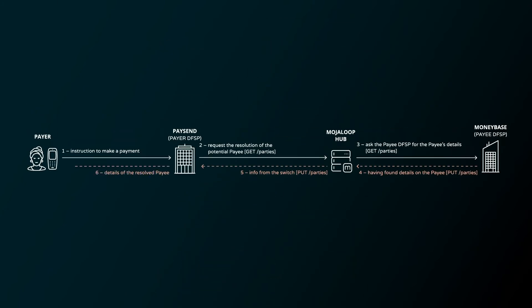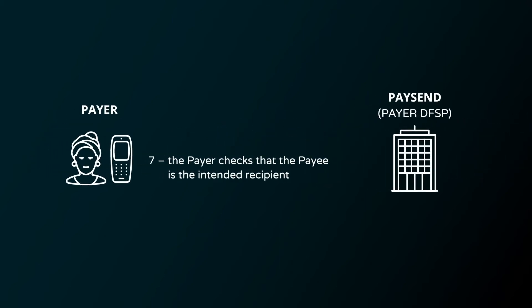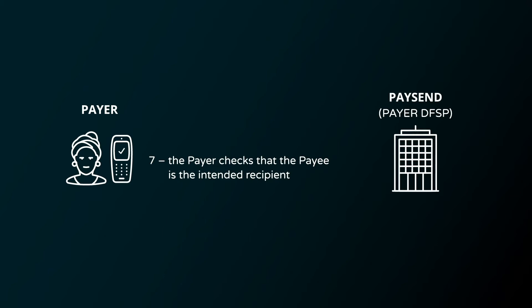Now PaySend asks Gladys to confirm that she intends to pay this person identified as John. Remember from video one that, like when transacting with cash, payments through Mojaloop cannot be revoked. This is because undoing a transaction after it's been done is an expensive thing to allow for, and Mojaloop is designed to make transactions simple and affordable. Since there's no reversing the payment once the money is cleared, we have to give Gladys the chance to back out in case she has not recognized the person being presented as the potential recipient. In some user experience flows like USSD, this confirmation step may be delayed until Gladys is informed of any fees associated with the transfer, so she only has to confirm once in the process and doesn't risk timing out the transaction.